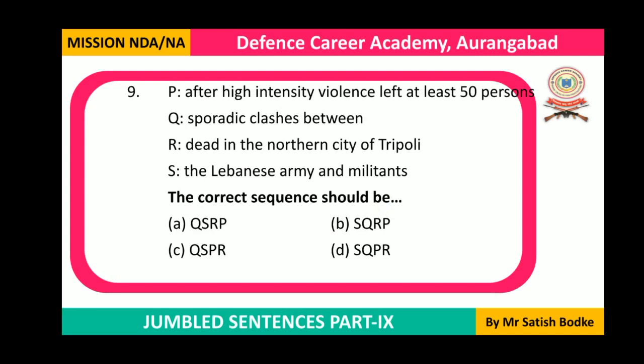Question number nine starts with a noun phrase. The sentence reads: 'Sporadic clashes between the Lebanese army and militants, after high-intensity violence, left at least 50 persons dead in the northern city of Tripoli.' The correct sequence is QSPR, which is option C.